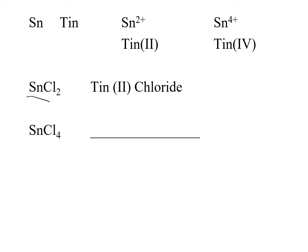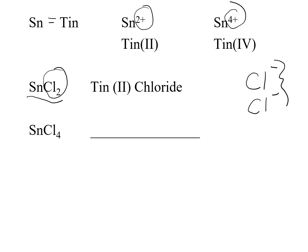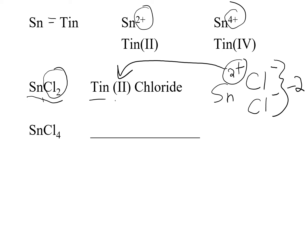For SnCl₂: Sn stands for tin. Tin is a transition metal that can form a plus 2 or a plus 4. To find the charge on tin, we look at the chloride portion. Chloride is in column 7 and forms a negative 1 charge; we have 2 chlorides, so the total anion charge is negative 2. With 1 tin, to balance the charge, tin must be 2 plus — so we put Roman numeral 2. The name is tin(II) chloride.